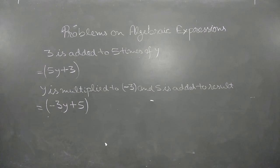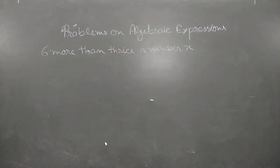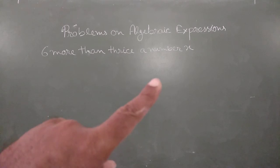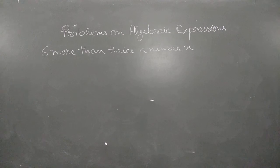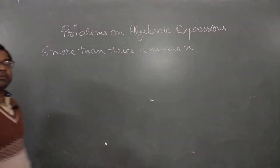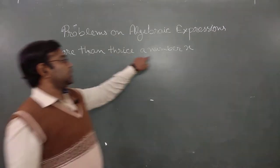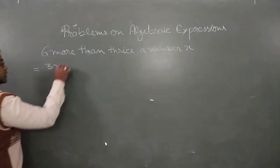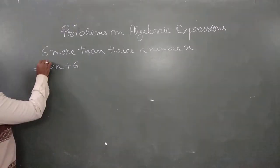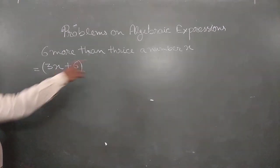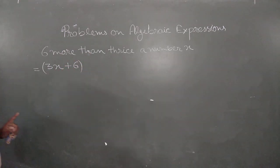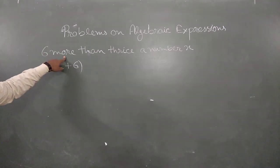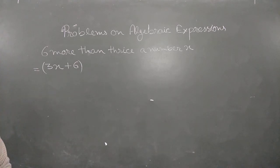Moving to more complex types: 6 more than thrice a number X. Here, 6 more means we add 6 to the result. Thrice a number X means 3 into X, which is 3X. So 6 more than thrice X is 3X plus 6. If it says 6 less than thrice a number, we use minus instead.